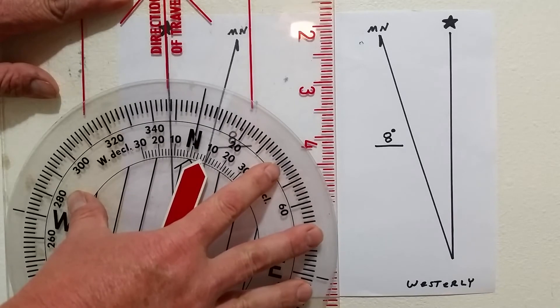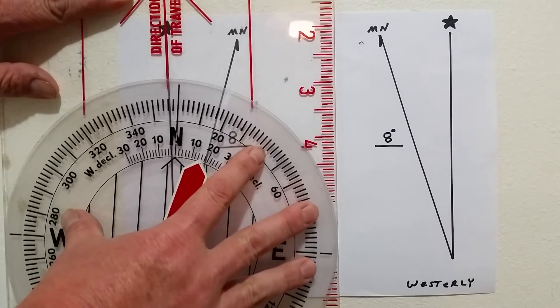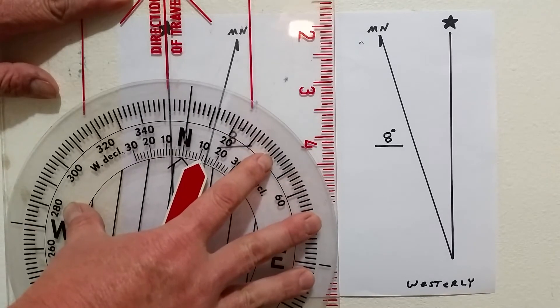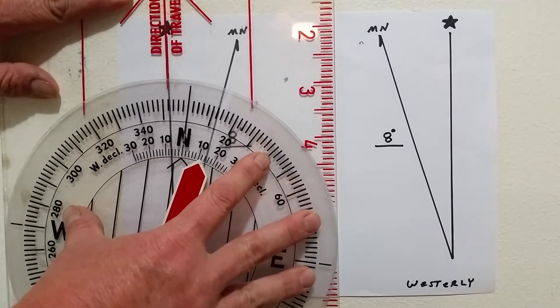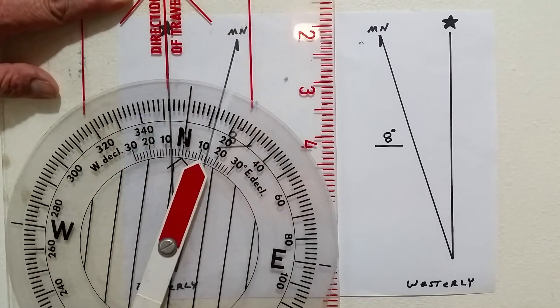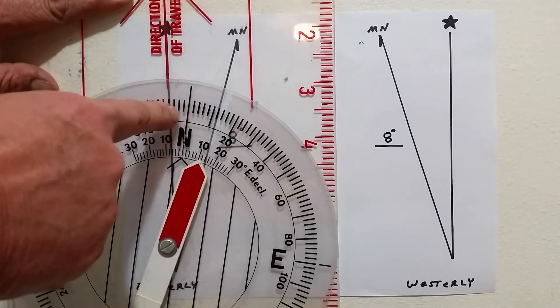Counting out the degrees: two, four, six, eight degrees.